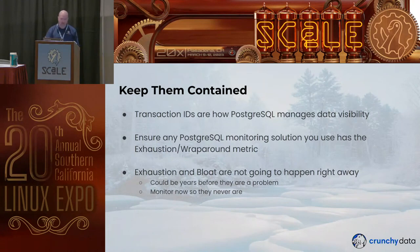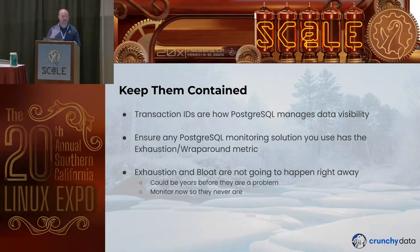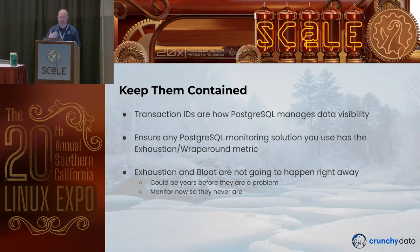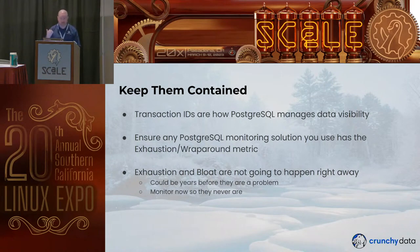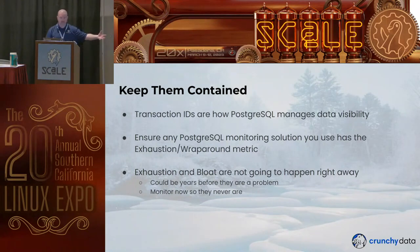Summary: transaction IDs are how Postgres manages data visibility, and you want any monitoring solution to monitor for the wraparound age metric at a minimum. For exhaustion and bloat, they're not going to happen right away — unless you have a very busy database, you probably won't see these problems for years, if ever. But they could eventually come up, and if you get on top of it now, when it's not a problem, then it will never be a problem.